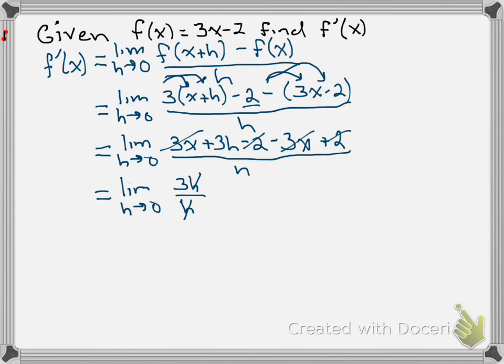Those h's will cancel, and now I can take my limit as h goes to 0. Well, the limit of a constant is just a constant, so this equals 3. So there's our f prime of x.